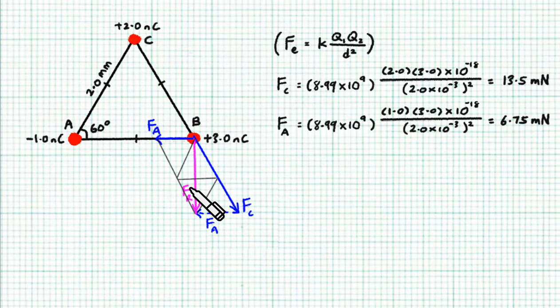And because this angle here is clearly 30 degrees, looking at this right-angled triangle here, Fr is clearly just Fc cosine 30 degrees.